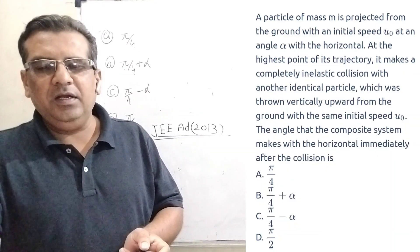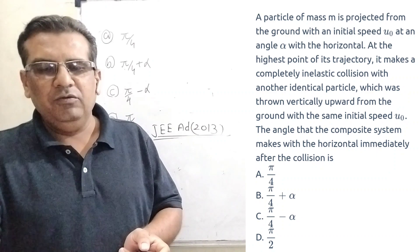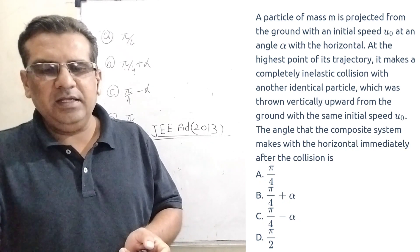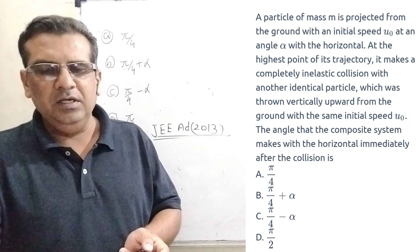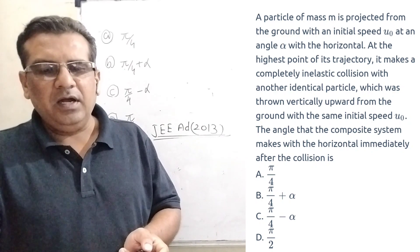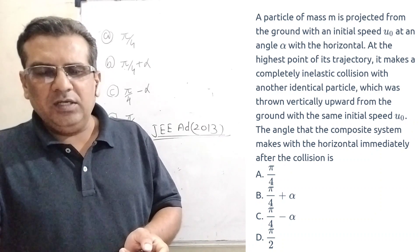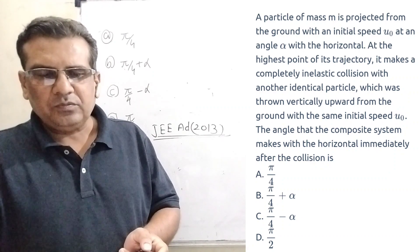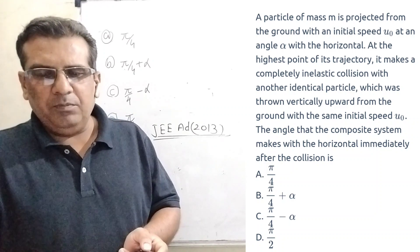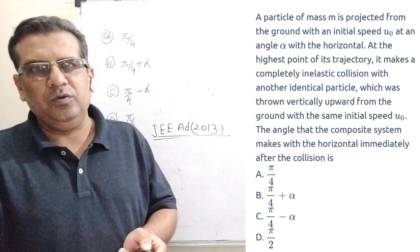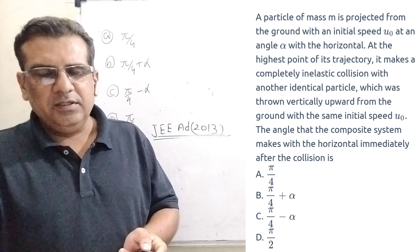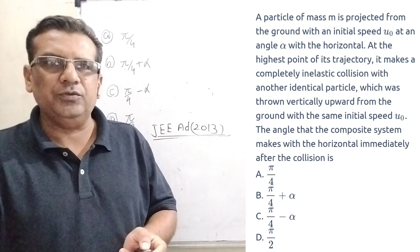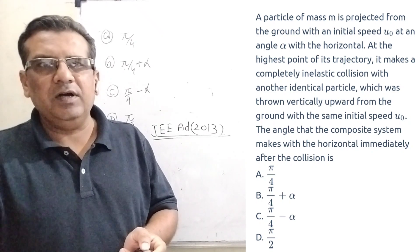The question is here. A particle of mass M is projected from the ground with an initial speed u0 at an angle alpha with the horizontal. At the highest point of the trajectory, it makes a completely inelastic collision with another identical particle, which was thrown vertically upward from the ground with the same initial speed u0. The angle that the composite system makes with the horizontal immediately after the collision. The four options are: pi by 4, pi by 4 plus alpha, pi by 4 minus alpha, and pi by 2. This question is from JEE Advanced 2013.